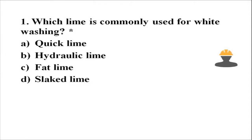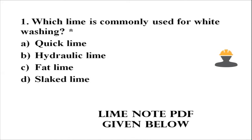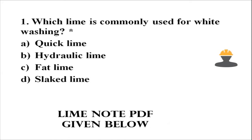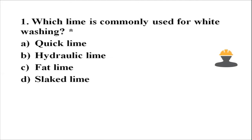First question: Which lime is commonly used for whitewashing? Whitewashing is a surface finishing treatment where you apply a painting material to the surface. The options are: Option A, quick lime; Option B, hydraulic lime; Option C, fat lime; Option D, slaked lime.